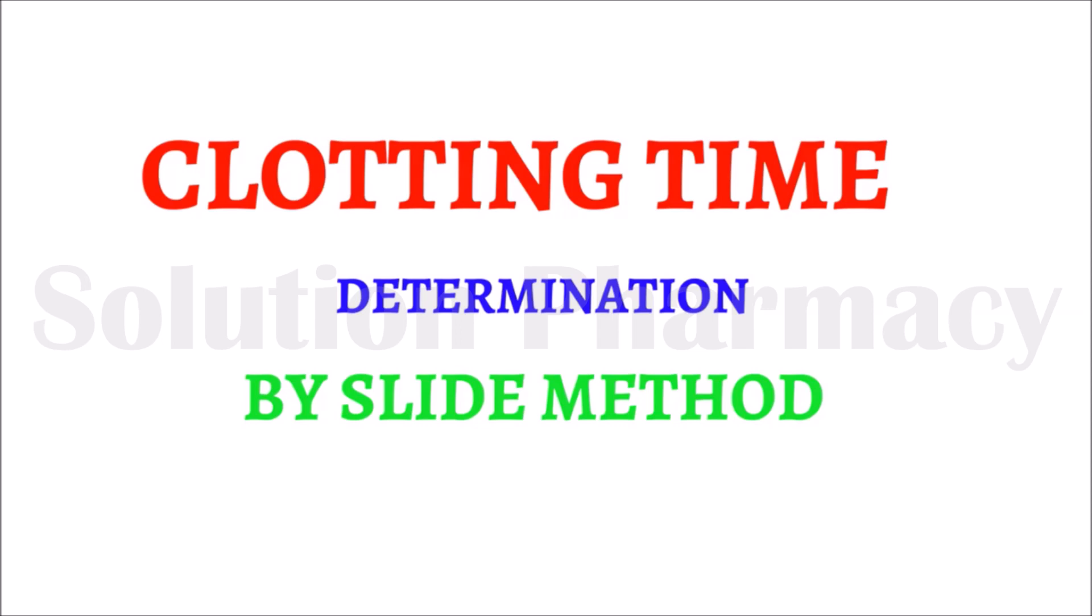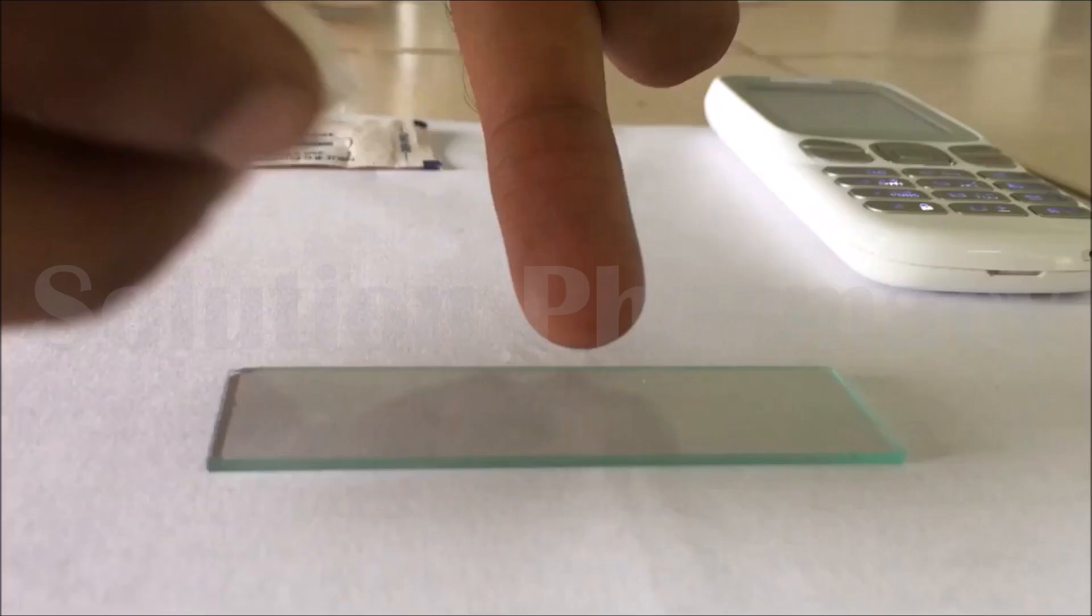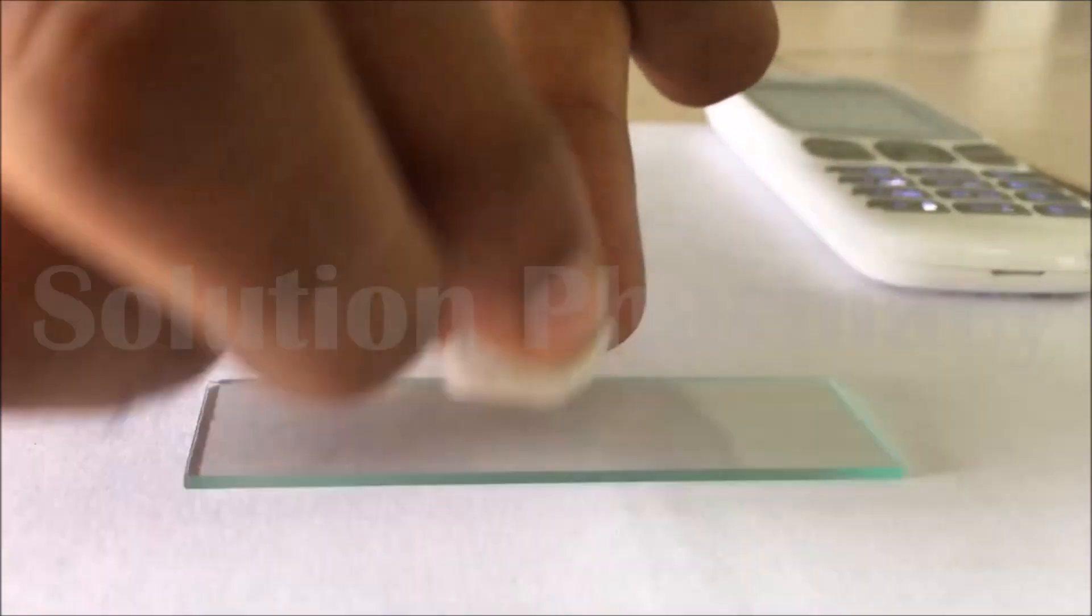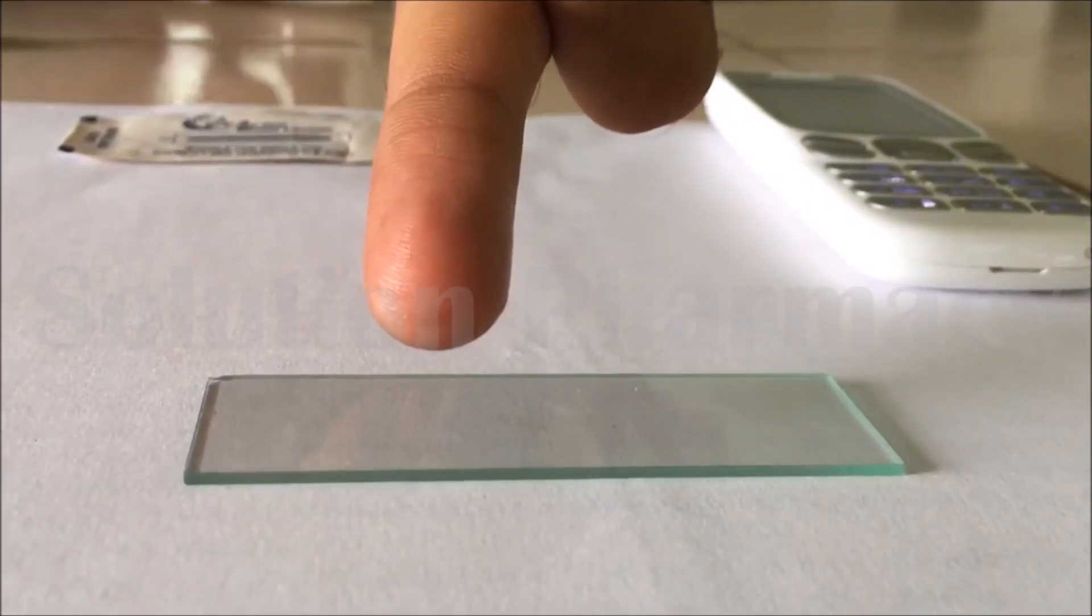For determining clotting time by the slide method, first sterilize your fingertip with ethanol, usually 70% ethanol, with the help of cotton swab. You can also use other suitable antiseptic to sterilize your finger.